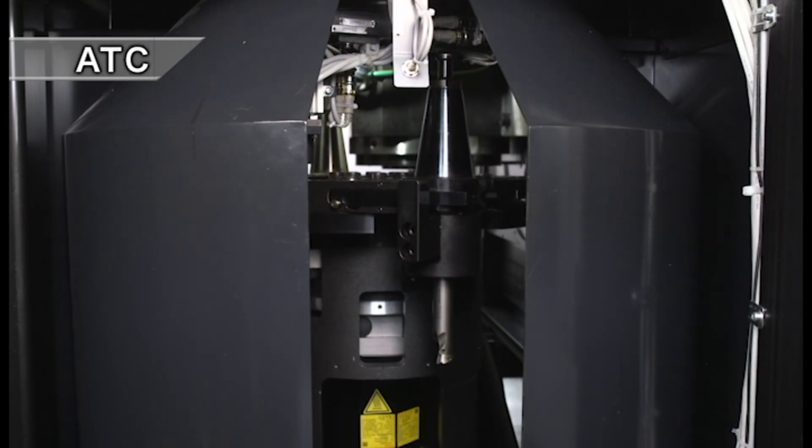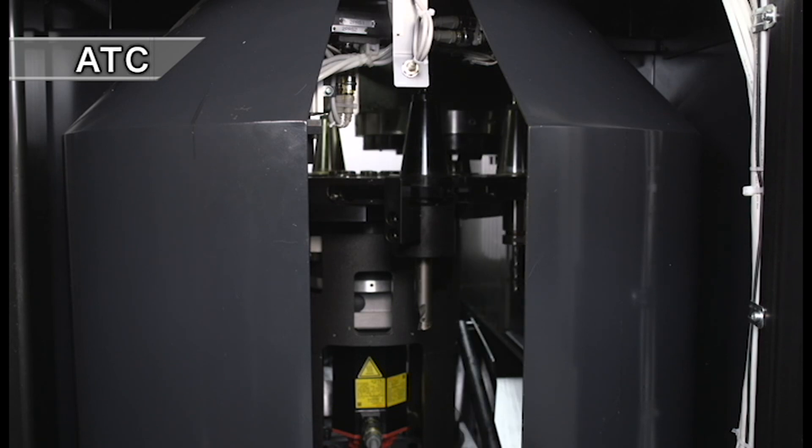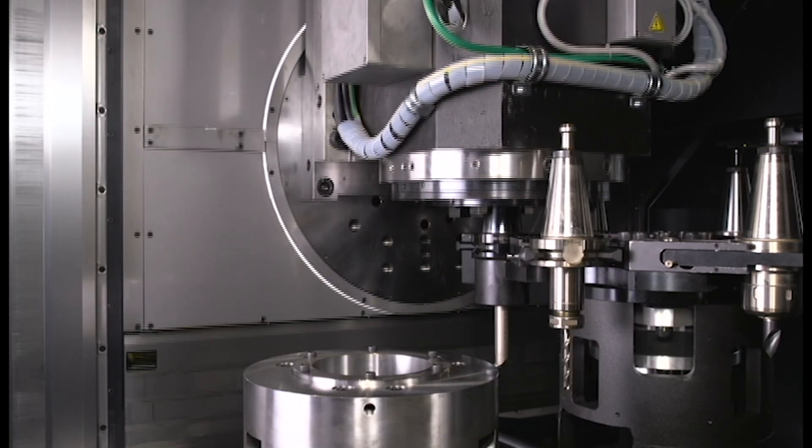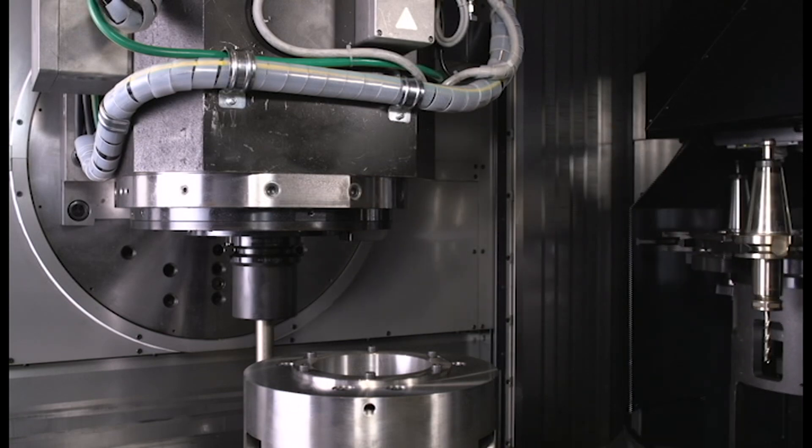Six tools can be set on the main unit and the automatic tool changer can smoothly change tools. Next, take a look at our Skiving Gear Shaping Machining Center GMS450 performing three jobs: turning, drilling, and gear cutting.